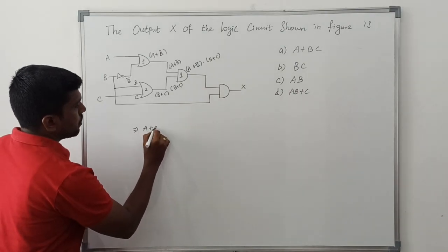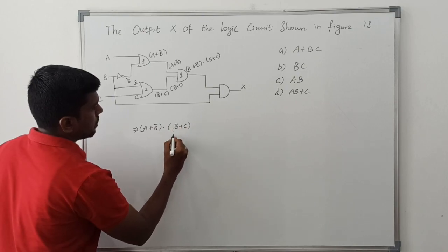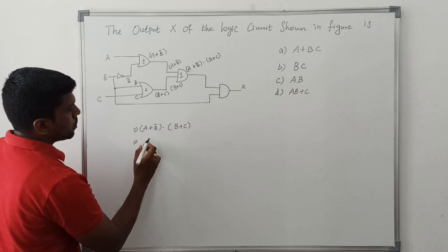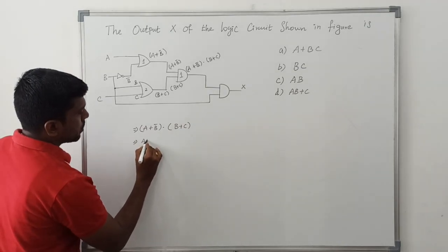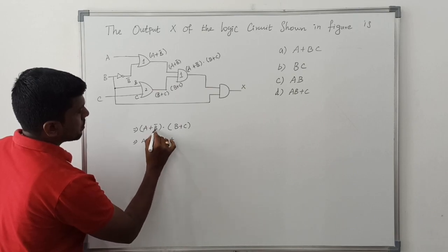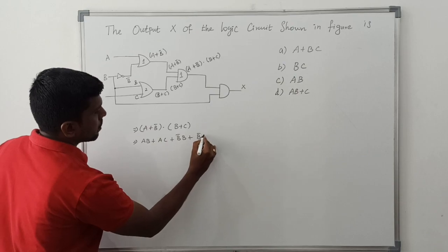So A plus B bar dot B plus C. Just taking the product of these two terms: A dot B plus AC plus B bar dot B plus B bar dot C.